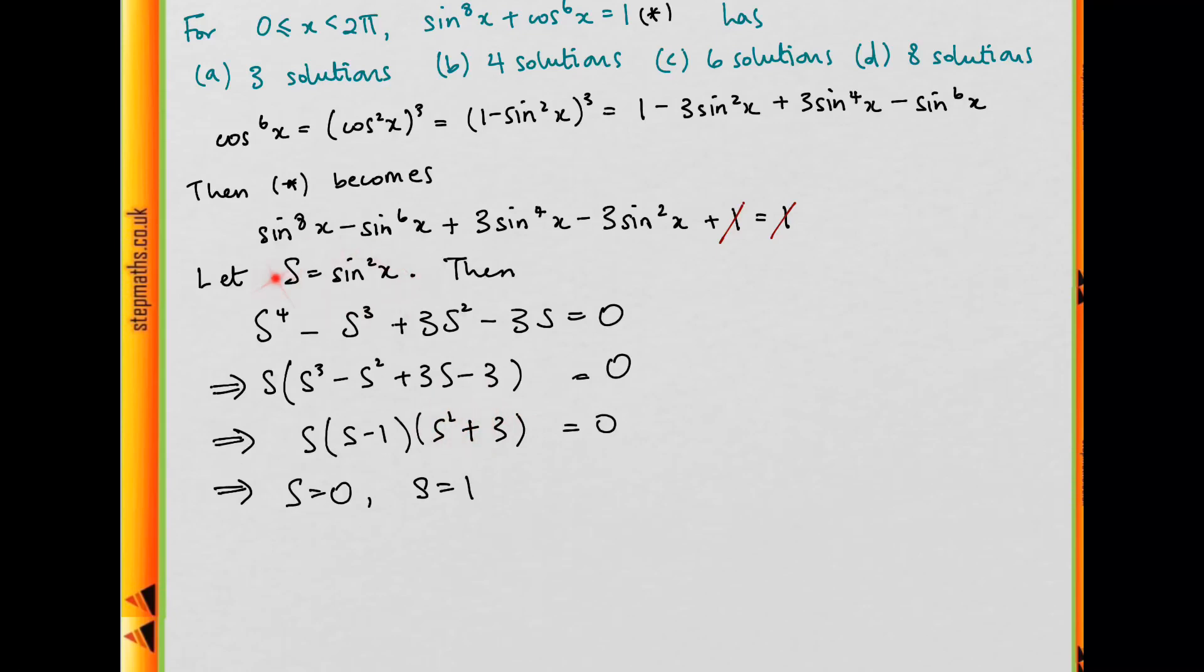Well, s is just sin squared, so we see that sin squared is 0 or 1, which means that sin x is either 0, 1 or minus 1. And in our range 0 to 2π, well, sin x is going to look like this, and we see that we're going to have 4 solutions when sin x is either 0, 1 or minus 1.